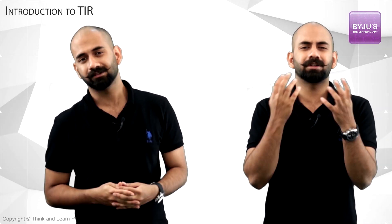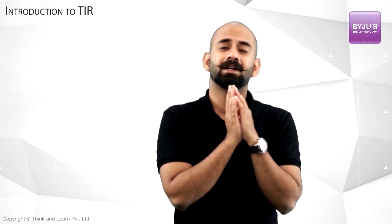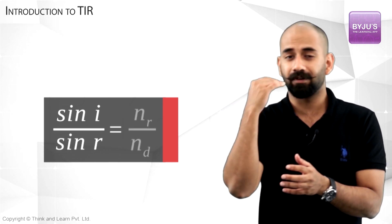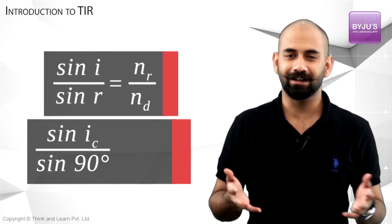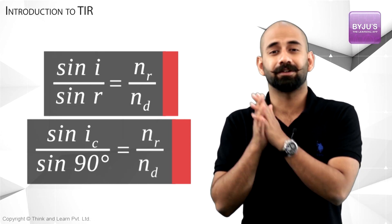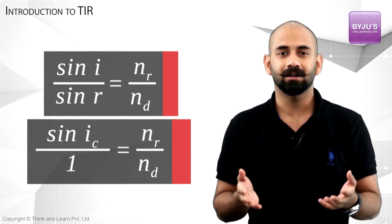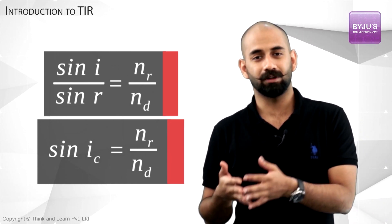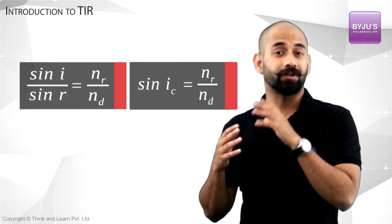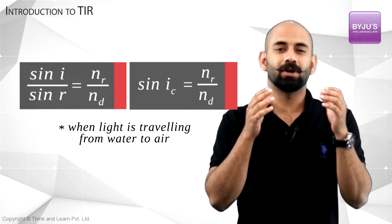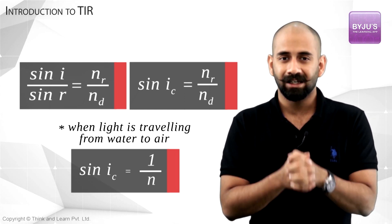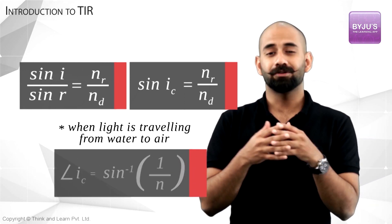How do we find the critical angle? We use Snell's law. When light moves from the denser to the rarer medium, sin(i) / sin(r) equals the refractive index of the rare medium with respect to the dense medium. At the critical angle ic, the angle of refraction equals 90 degrees, so sin(ic) / sin(90°) equals that refractive index. Since sin(90°) = 1, we find sin(ic) equals the refractive index of the rare medium with respect to the dense medium. For light moving from water to air, sin(ic) = 1/n, where n is the refractive index of water with respect to air. Therefore, the critical angle of water is ic = sin⁻¹(1/n).